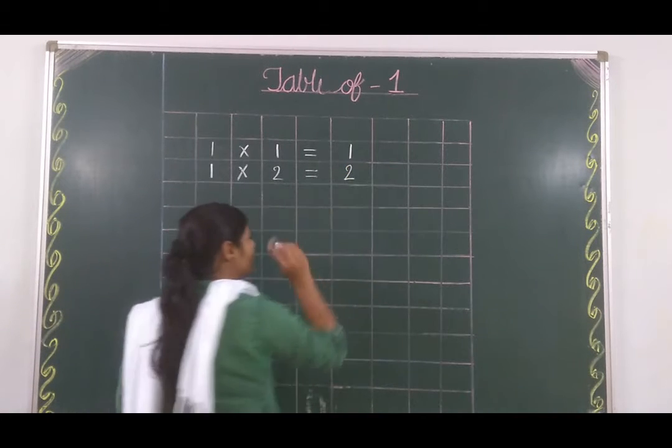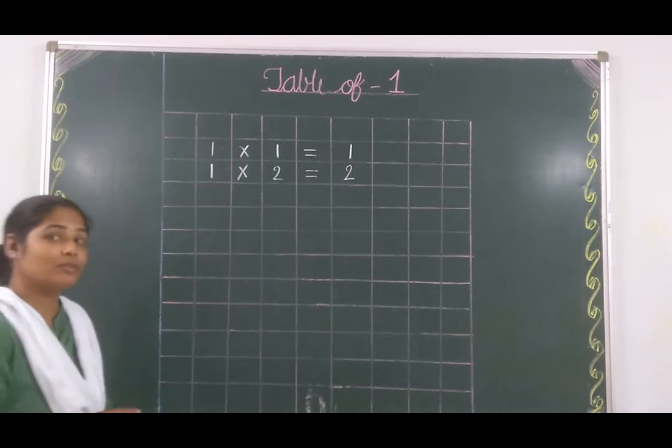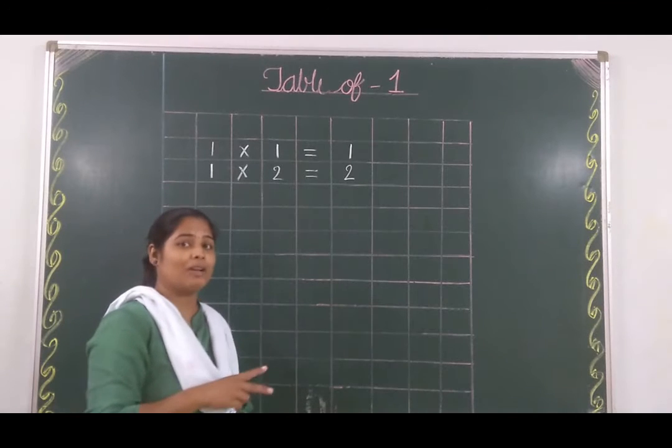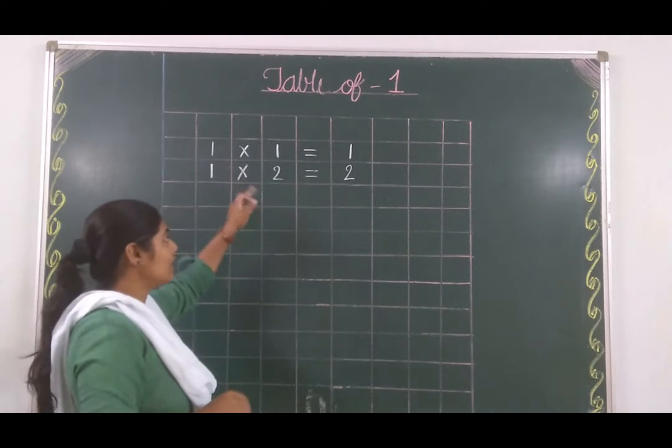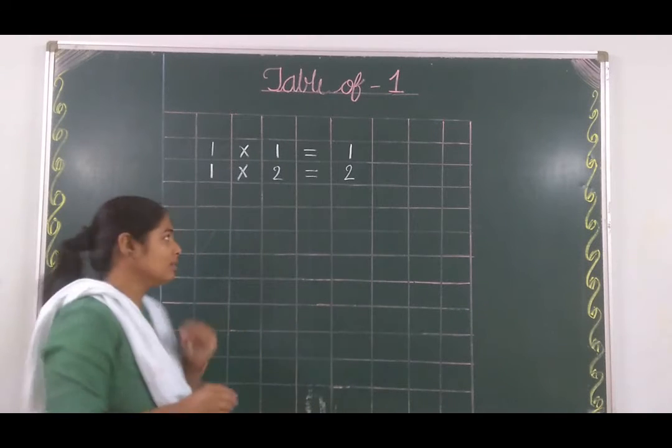In table of 1 we have to add 1, in table of 2 we have to add 2 and in table of 3 we have to add 3. Okay, so here we are writing table of 1. Do we write only 1?